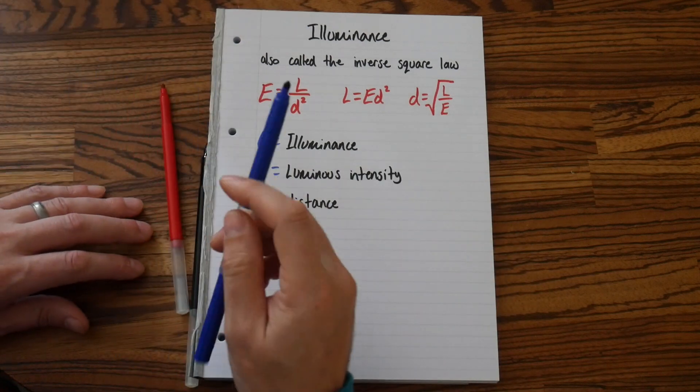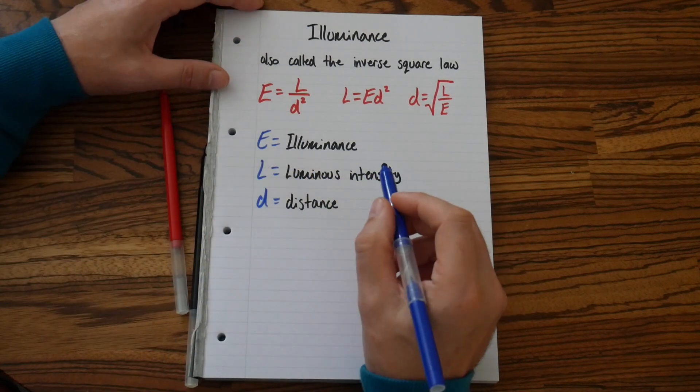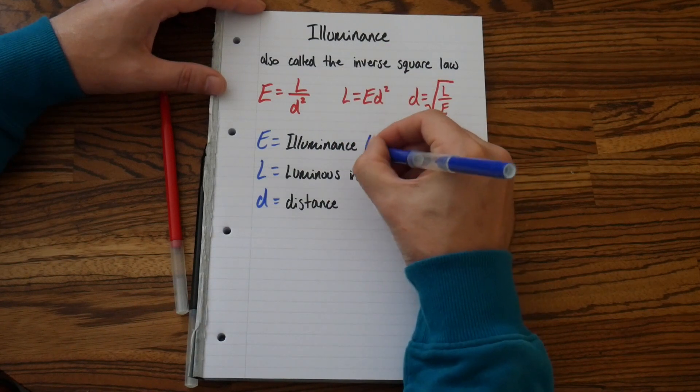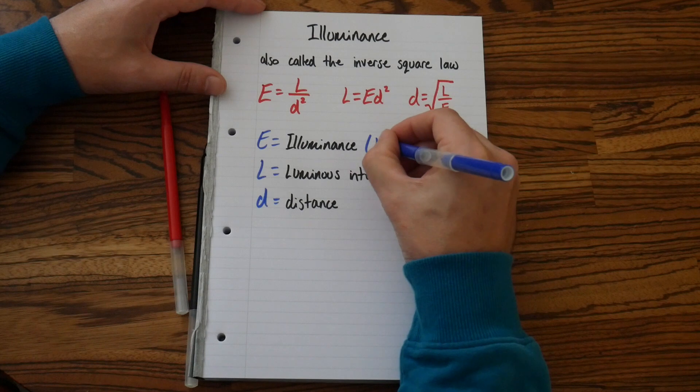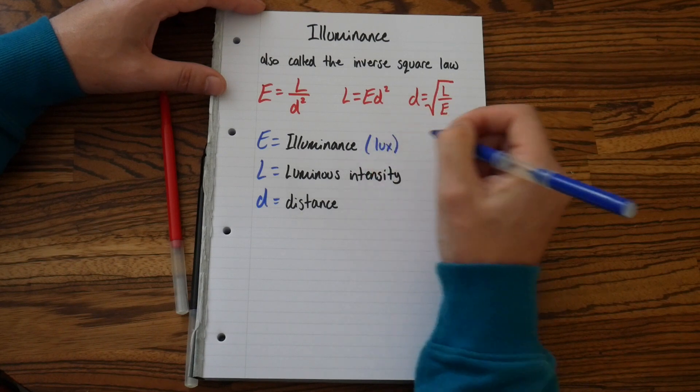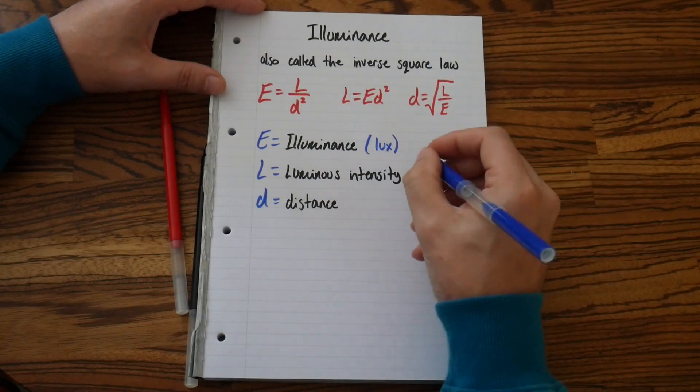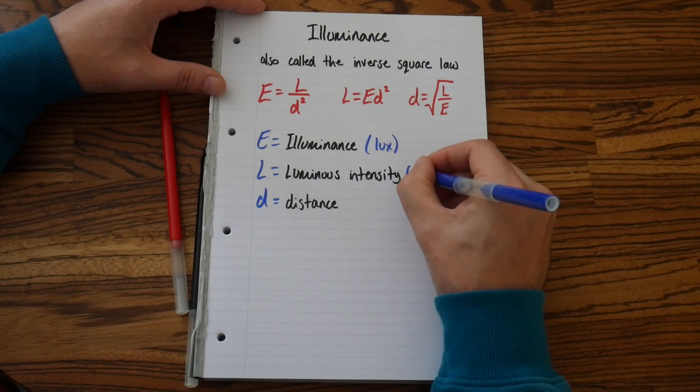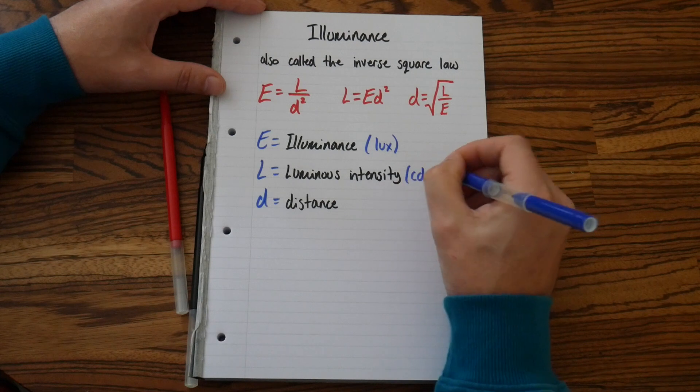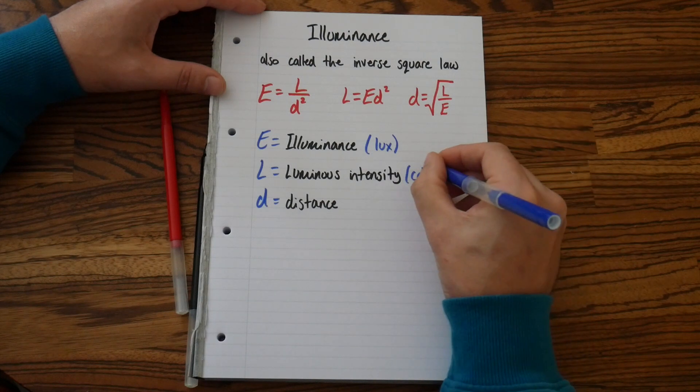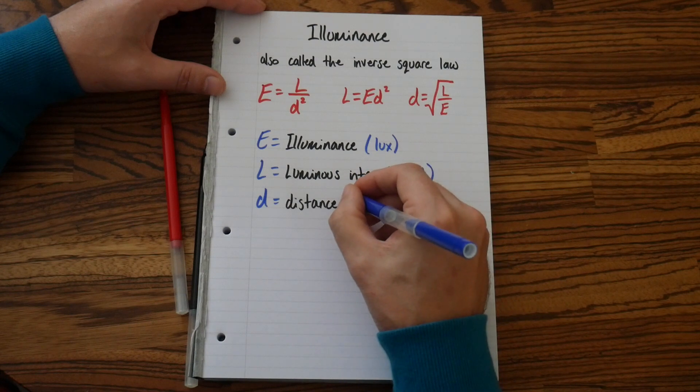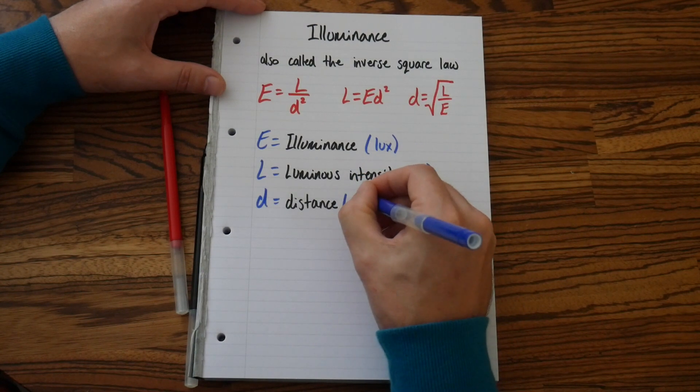So, switch pens. Let's write down the SI unit. So, the SI unit for Illuminance is Lux. Luminous Intensity is Cd. Candela. Distance is metres.